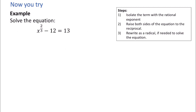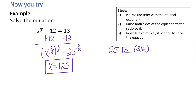Go ahead and pause the video and try solving this problem on your own. To solve this equation, you're going to isolate the term with a rational exponent by adding 12 to both sides. When you add 12 to both sides, you get x to the 2 thirds equals 25. Then you can undo that 2 thirds power by raising both sides to the 3 over 2 power, which gives you x equals 125.